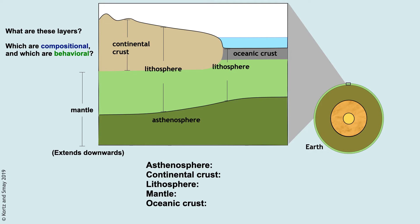We have a little bit of a review here. Can we figure out what layers, from the ones listed on this diagram, are behavioral and which are compositional? Here's our list: asthenosphere, continental crust, lithosphere, mantle, and oceanic crust. Please take a minute or two, pause the video, and see if you can match up which ones are behavioral and which ones are compositional.